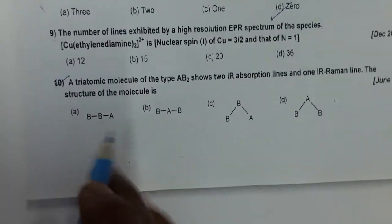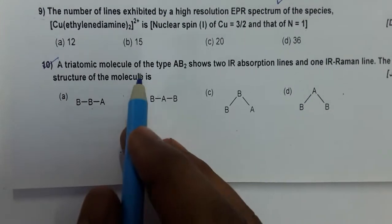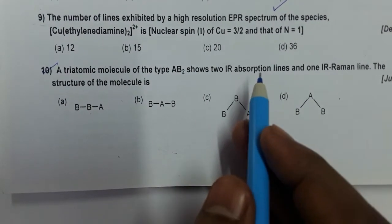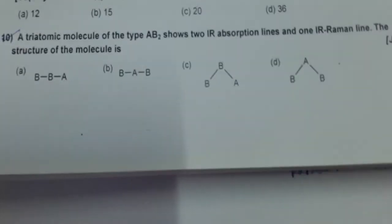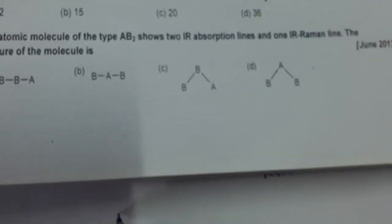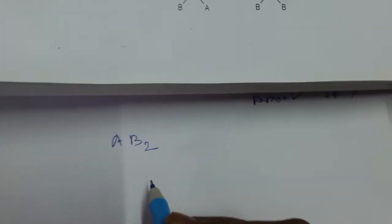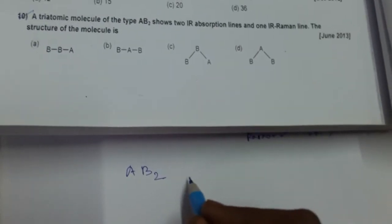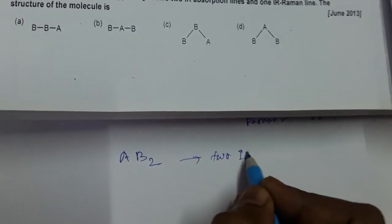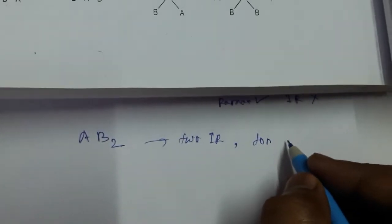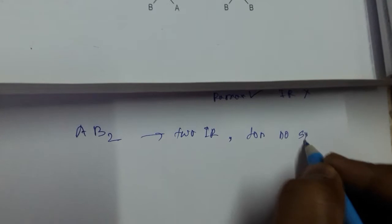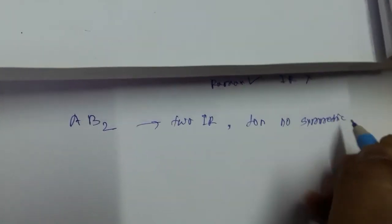Now consider a second example: a triatomic molecule of type AB2 shows two IR absorption lines and one Raman line. For AB2 molecules, the symmetric stretching mode is not IR active.